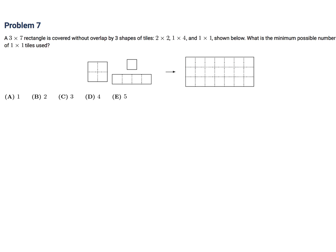A 3 by 7 rectangle is covered without overlap by three shapes of tiles: 2 by 2, 1 by 4, and 1 by 1 as shown. What is the minimum possible number of 1 by 1 tiles used? Okay, let's see here. So let's see what we can do. Let me use red. So this guy, let's place it here. Let's place it here. And let's place it here. And then this 4 one, let's place it here. And I think that is all I can do.